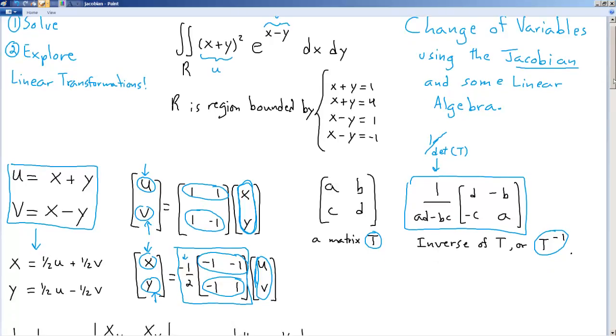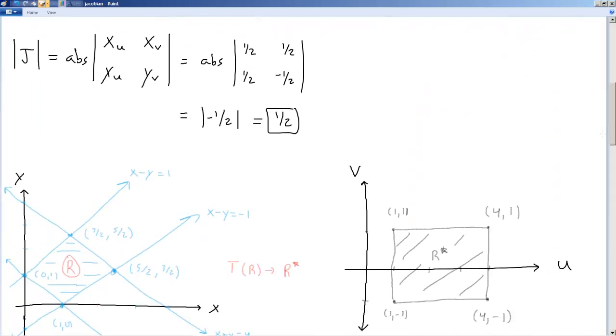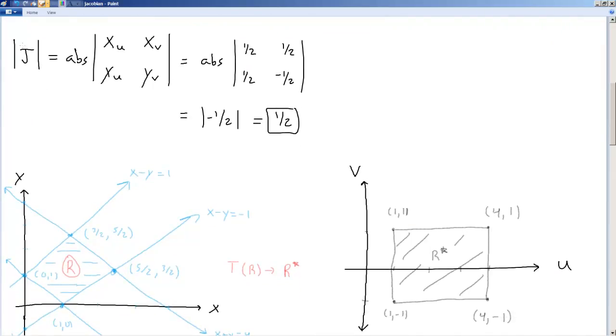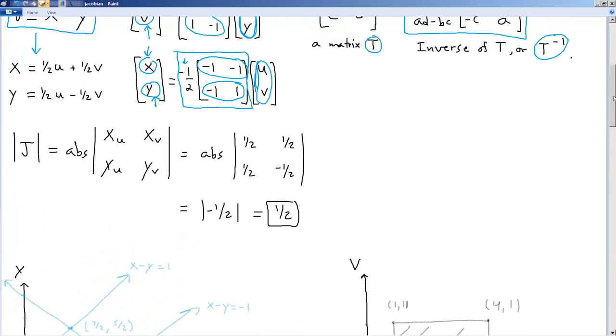So now that we have this, what do we do? Well, the Jacobian, right, is the absolute value of x with respect to u, x with respect to v, y with respect to u, y with respect to v, keeping in mind what x and y are. We're using these as x and y.